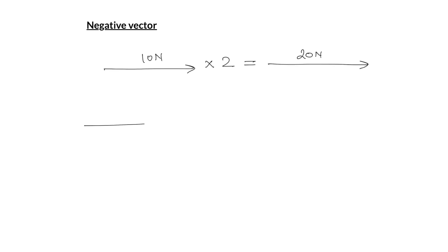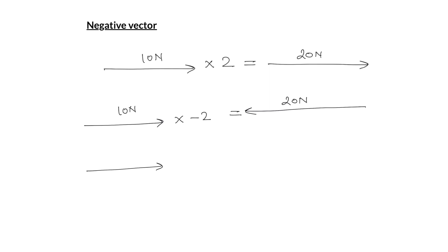Similarly, if you have a vector of magnitude 10 Newton and multiply it by the scalar quantity minus two, you get a vector of magnitude 20 Newton but in the opposite direction. So if you multiply a vector of magnitude 10 Newton by minus one, you get a vector of magnitude 10 Newton in the direction opposite to the initial vector.